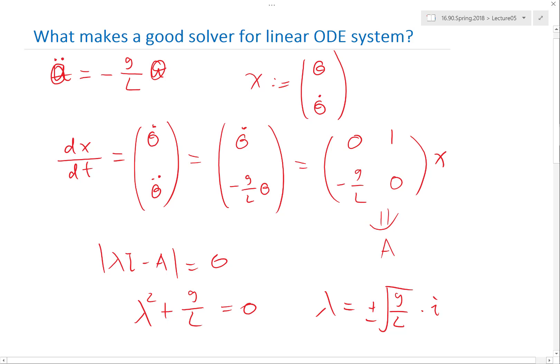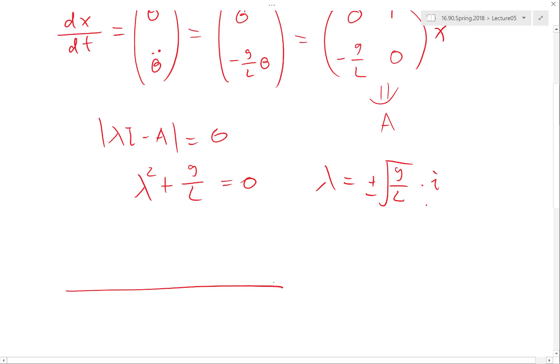That means if I decouple the X by performing linear combinations of θ and θ dot, you have to perform not only eigenvalue analysis but compute the eigenvectors of this matrix A to figure out what are the linear combinations. Then you're gonna find two scalar ODEs, one with the lambda of plus square root of g over L times i, one with the negative of that.